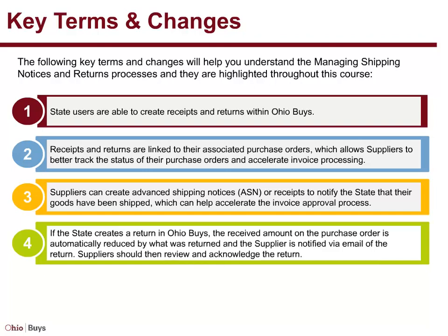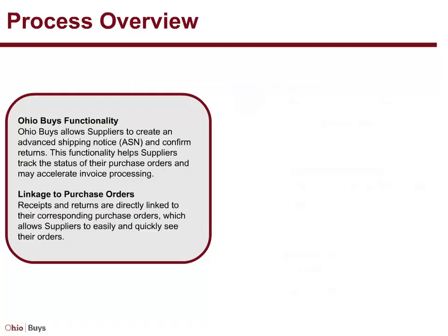Suppliers should then review and acknowledge the return. OhioBuys allows suppliers to create an Advanced Shipping Notice and confirm returns. This functionality helps suppliers track the status of their purchase orders and may accelerate invoice processing. Receipts and returns are directly linked to their corresponding purchase orders, which allows suppliers to easily and quickly see their orders.